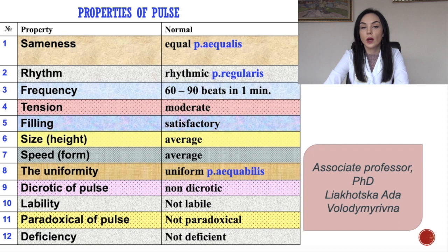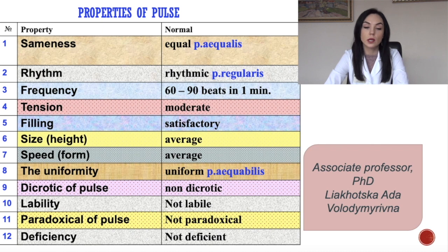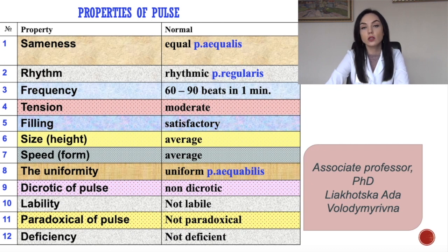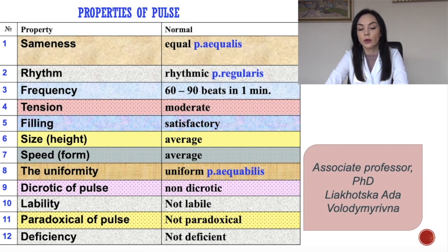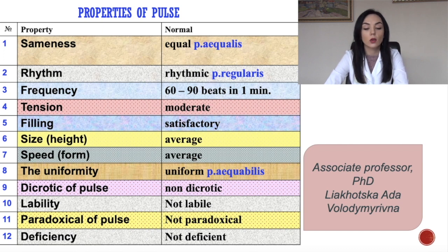We have 12 properties of the pulse. First, sameness — in normal it is pulsus aequalis. Next, rhythm — the pulse should be rhythmic, pulsus regularis. Frequency — normal is 60 to 90 beats per minute. Tension should be moderate. By feeling it should be satisfactory. By size — average. Speed — also average. Uniformity should be pulsus aequabilis. Also dicrotic pulse, lability, paradoxical pulse and deficiency — in a normal healthy person these should be absent.